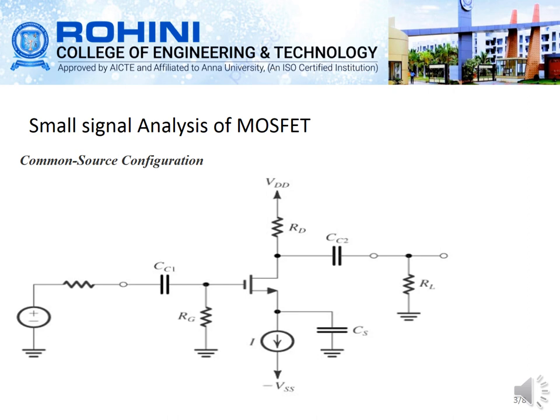Here you can see the common source configuration of fixed bias. In the fixed bias we consider the gate, source, and drain — three terminals. This is the fixed bias circuit where you can find the gate resistance on the input side, and coupling capacitors placed on both the input and output sides. While drawing the hybrid model, we will be short-circuiting those capacitors and the VDD supplies.